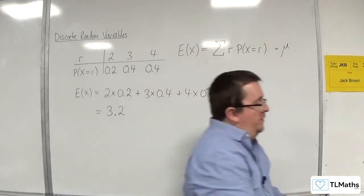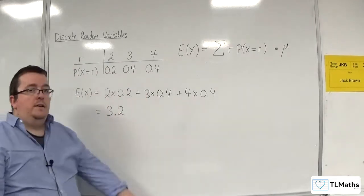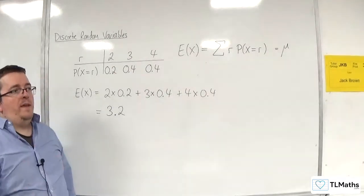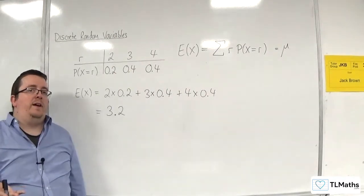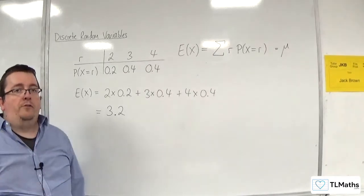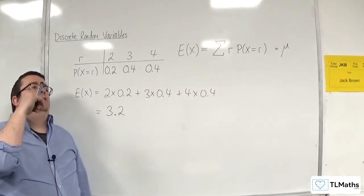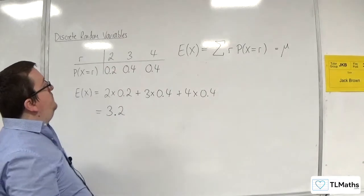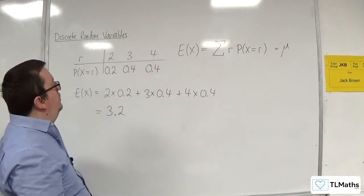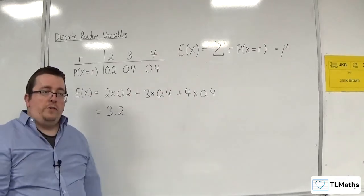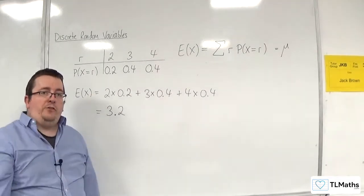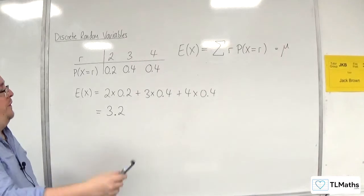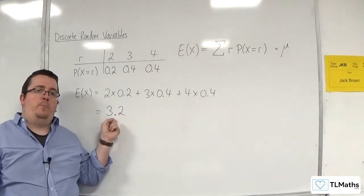Notice that the value we get does not have to be one of the values in the table. Some people, when they hear 'expected value,' think it must be one of the values listed. Think of it this way: if this were a spinner with three regions — 2, 3, and 4 — with those respective probabilities, and you kept spinning it many, many times and recording the scores, all those scores would average out to 3.2.